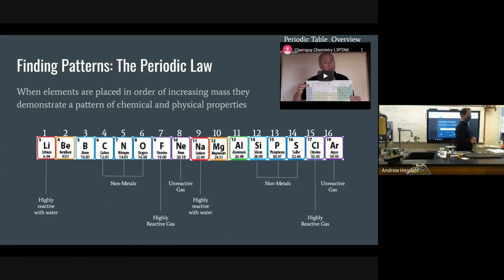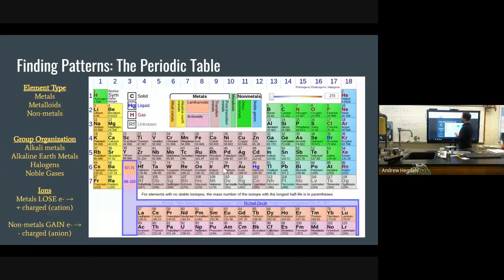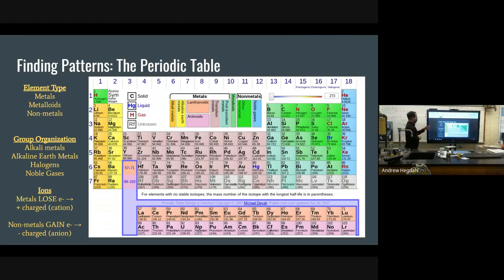So the elements on the periodic table are organized in two different ways. There's groups. Elements in the same group have similar chemical properties. And those are columns on the periodic table. And then there are periods which are rows on the periodic table. Other ways that elements are classified is by the type of element. So we can organize elements by either being a metal, metalloid, or non-metal. These are broad categories.